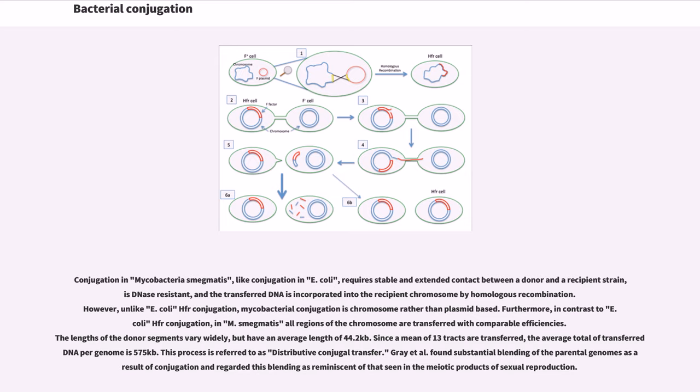This process is referred to as distributive conjugal transfer. Gray et al. found substantial blending of the parental genomes as a result of conjugation and regarded this blending as reminiscent of that seen in the meiotic products of sexual reproduction.